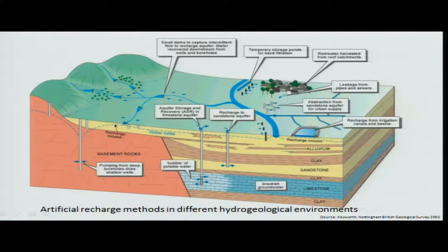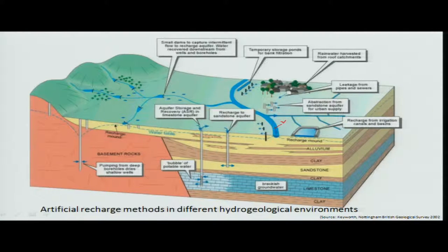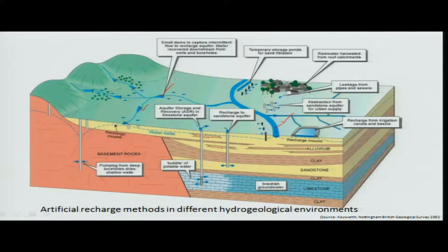In different environments, surface water is based on river flow and rainfall. It falls and is stored in either man-made or natural reservoirs. This was covered in the previous lecture about surface runoff potentials.